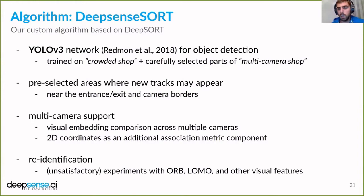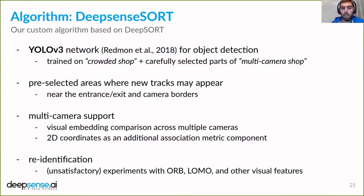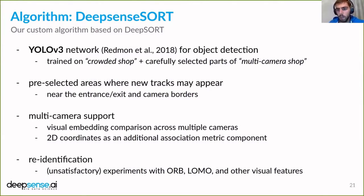For re-identification, this was the component we were most unsatisfied with. The original DeepSORT embeddings didn't really work: when a person moved from one camera to another, or disappeared behind a shelf and reappeared facing a different direction, it could not recognize it was the same person. We experimented with different feature extractors like ORB and LOMO, and also applied FairMOT embeddings to our DeepSense Sort tracker, but nothing really satisfied us in this dimension.